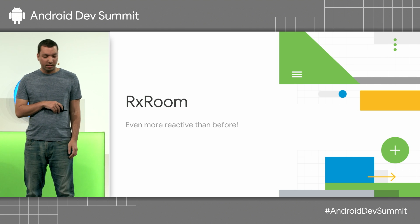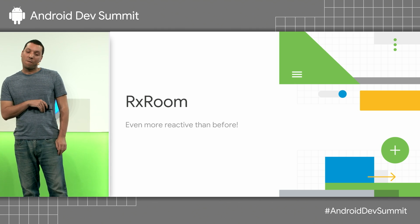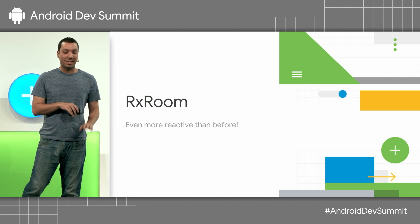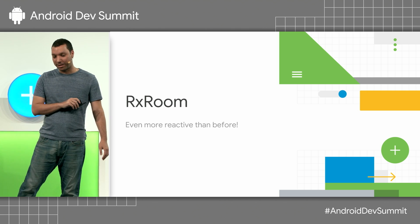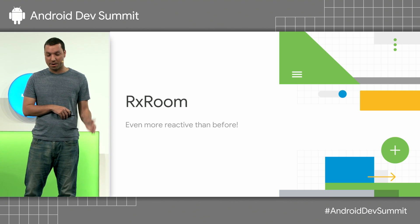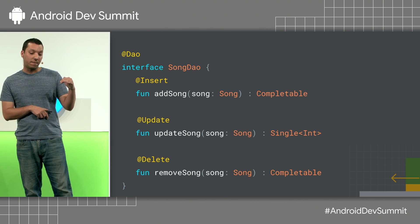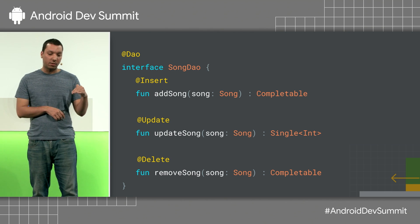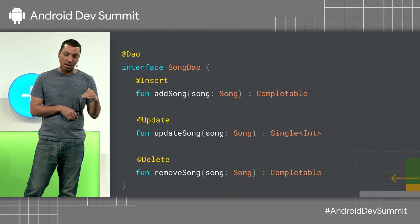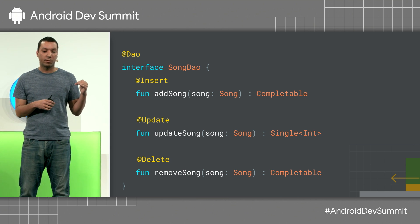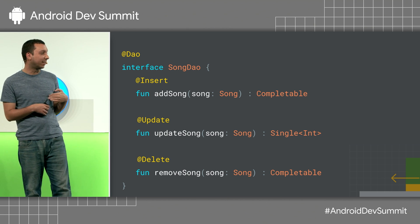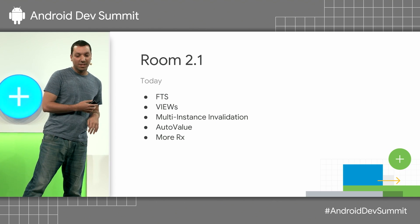Another highly requested feature is more Rx support. You can now have reactive return types — Completable, Single, and Maybe — in methods annotated with @Insert, @Update, and @Delete. We listen to what you request and we implement it. It's currently only available in Rx, though it might be available in other types like coroutines in the future.